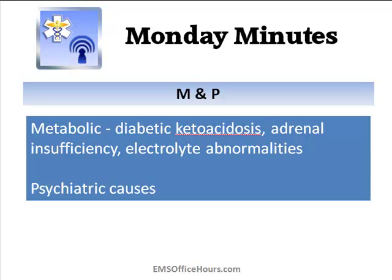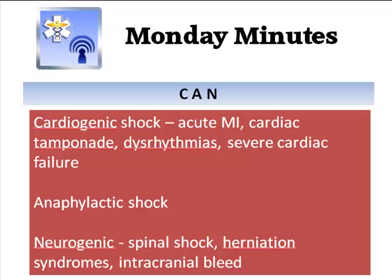And what about CAN? C is cardiogenic shock — acute MI, cardiomyopathy, cardiac tamponade, dysrhythmias, severe cardiac failure, maybe a valvular type disease. A is anaphylactic shock — we all know what that is and the causes of that. And N is neurogenic type shock — things like spinal shock, maybe a herniation syndrome or intracranial bleed.